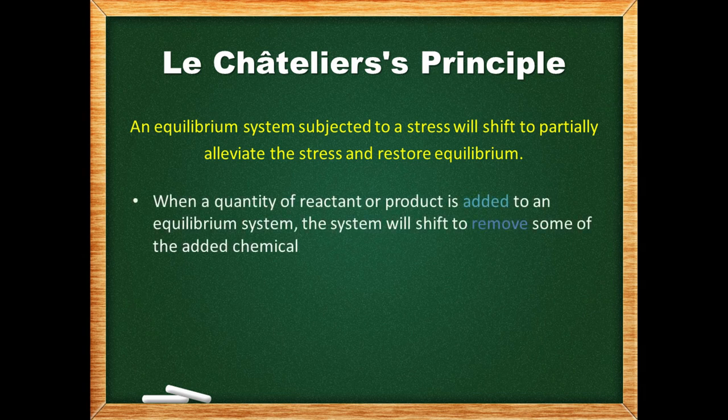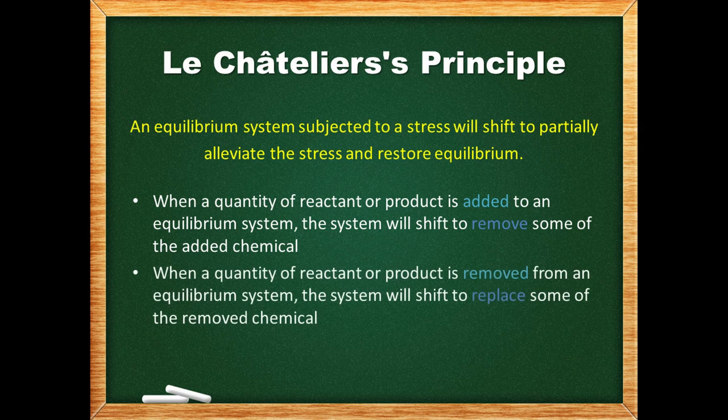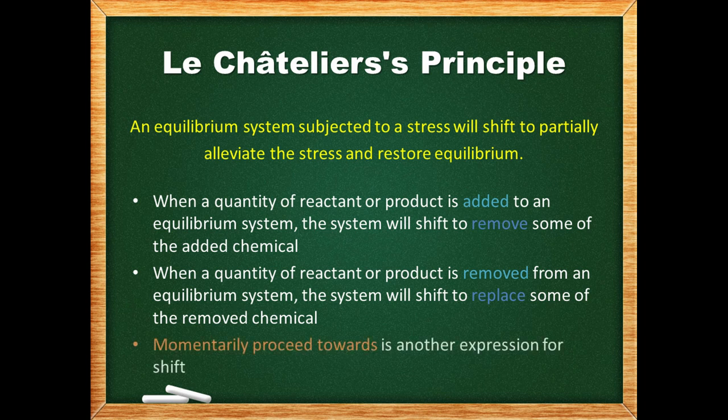When a quantity of reactant or product is added to an equilibrium system, the system will shift to remove some of the added chemical. When a quantity is removed, the system will shift to restore some of the removed chemical. Another expression for shift is to 'momentarily proceed towards,' which is actually preferred by readers of the AP exam.